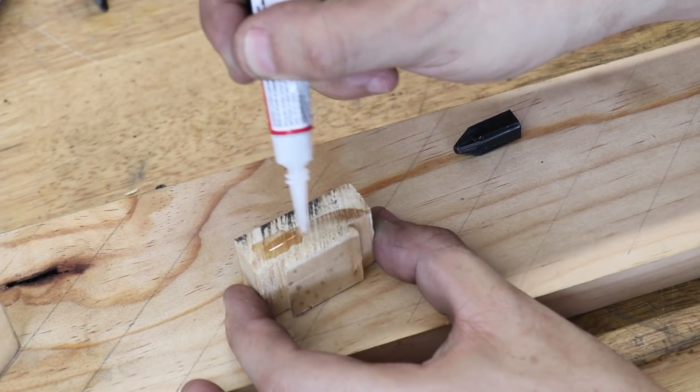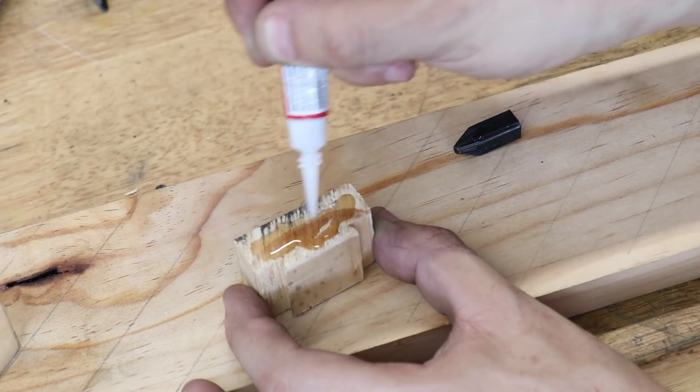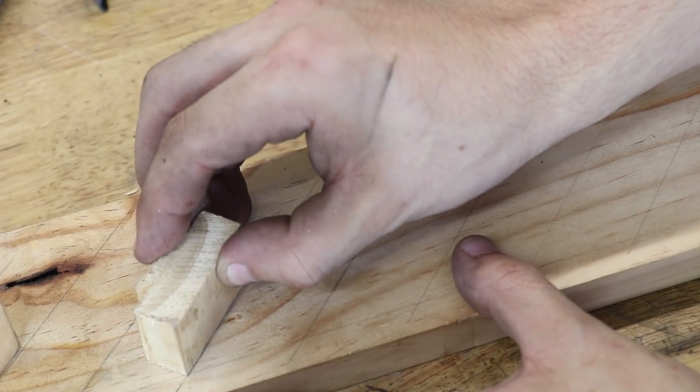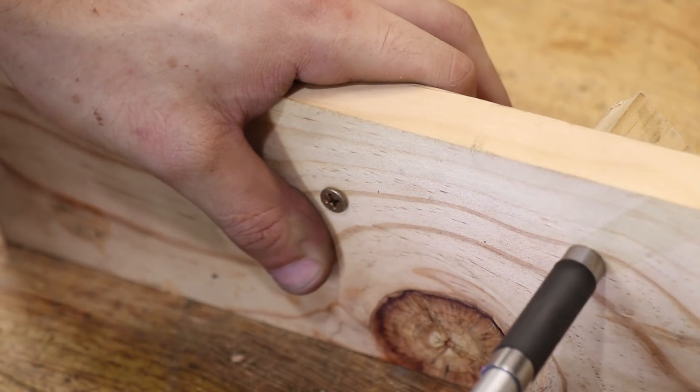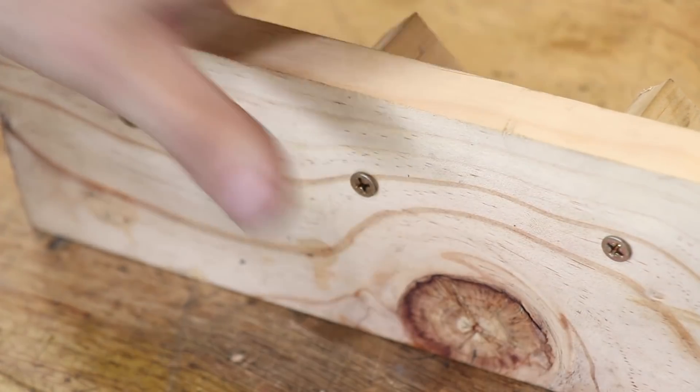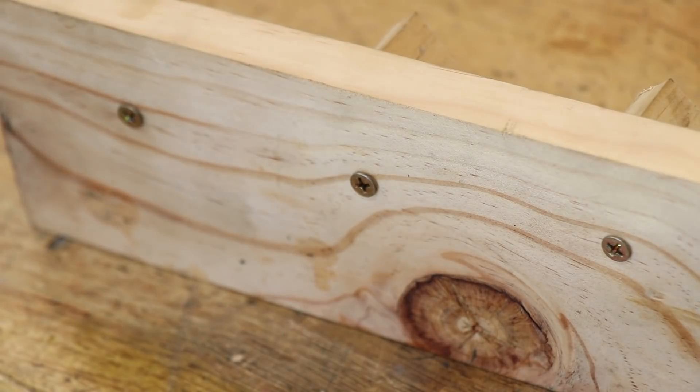I'll use some CA glue to bond the wood in place, and then I'll come in from the other side and screw it in. Using one screw should be enough. And then I'll screw the wood to some drawer runners.